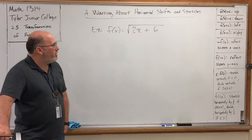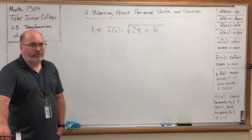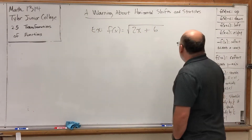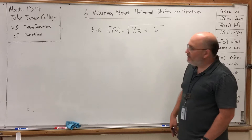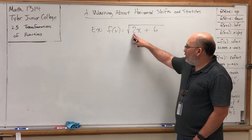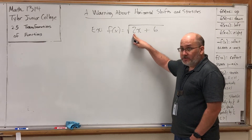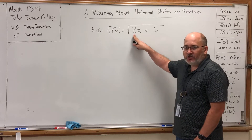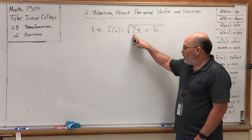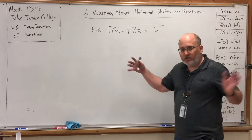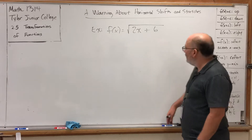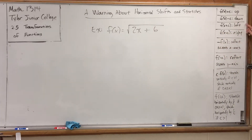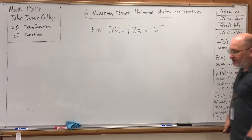Sometimes a function will have a combination of a horizontal shift and a horizontal stretch. Recall that a horizontal stretch or shrink is invoked by multiplying in front of the X. Specifically, if there's a number in front of the X greater than 1, it invokes a shrink by the reciprocal. So 2 in front of X would invoke a horizontal shrink by a factor of one-half. Adding or subtracting a number onto the X invokes a horizontal shift — either left or right — the opposite of what you expect.